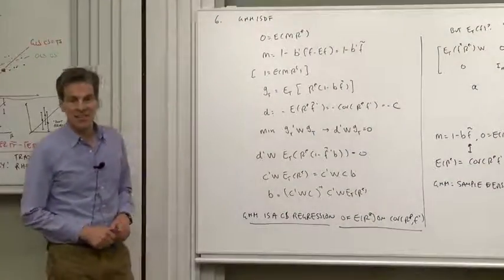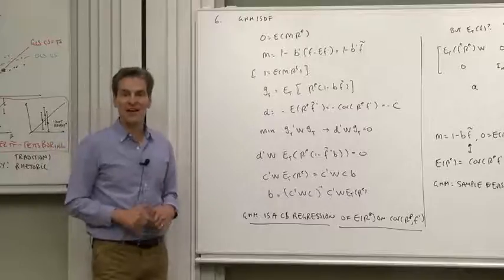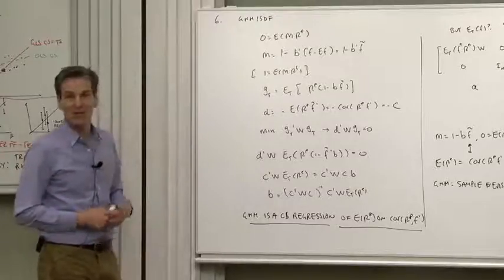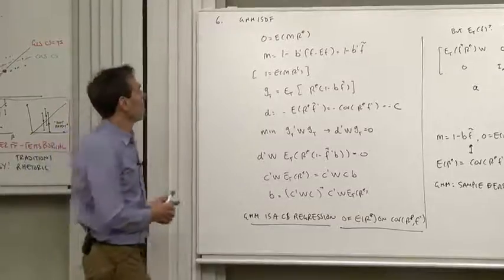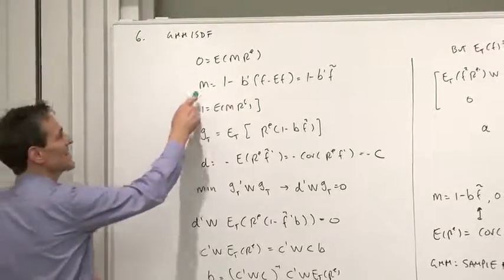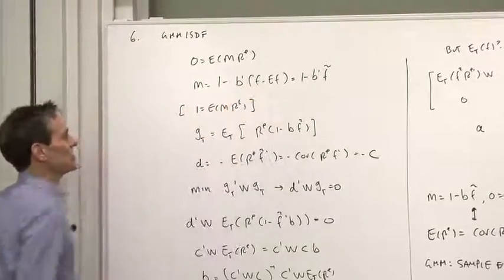And last but not least, let's look at the GMM stochastic discount factor way of estimating an asset pricing model, a linear factor model of the type we've been looking at. What we would do is write the moment condition, 0 equals E of mR, write the discount factor as a linear function of the factor.